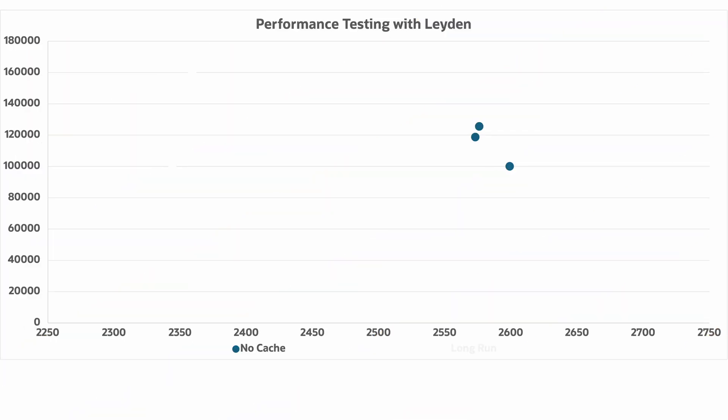Let's see the benefits of using an AOT cache across different scenarios. As a control, I executed 10 seconds of load against the Pet Clinic application with no AOT cache. It took about 2.5 to 2.6 seconds to start, and about 100,000 to just over 120,000 requests were processed. Using a cache generated from only starting up the application, the requests processed were about the same with one outlier, but startup time dropped to about 2,350 milliseconds. With a cache from 30 seconds of load, startup time was roughly the same again, but requests processed rose to about 140,000 to 160,000. Finally, with a cache from 3 minutes of load, the performance was roughly the same as 30 seconds, demonstrating a point of diminishing returns for training runs. Though this is early days for Leiden, and many of these numbers can and will change as the project matures.